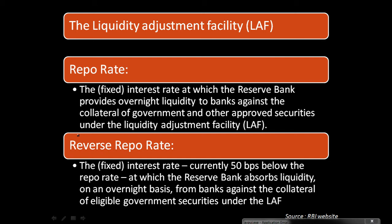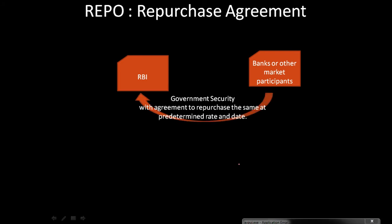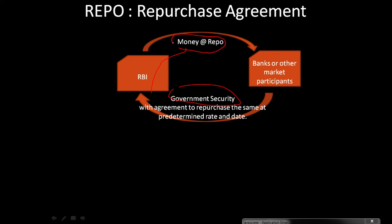Now let's understand the difference between repo and reverse repo. Repo stands for repurchase agreement. Under repo, banks — as well as other market participants like primary dealers — borrow money from the RBI. However, they need to put something as collateral, which is a government security. So money flows from the RBI to the banks, and the bank provides government securities as collateral to the RBI. Against that collateral, they receive money at the repo interest rate.